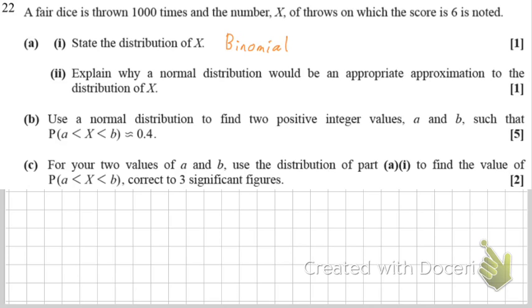Some people might write X squiggle B, N, P for that with the particular values of N. I think you get the mark for that as well, but state the distribution just wants either binomial or normal, so just binomial in this case.